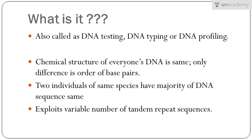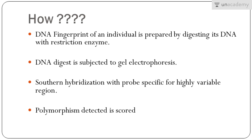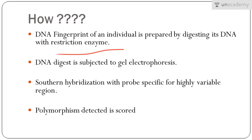To prepare the DNA fingerprint of an individual, its genomic DNA is first subjected to restriction digestion — that is, it is digested and broken into smaller fragments with the help of a suitable restriction enzyme. A restriction enzyme acts as a molecular scissor, cutting the DNA at specific locations known as recognition sequences, producing smaller fragments from the complete genomic sequence.